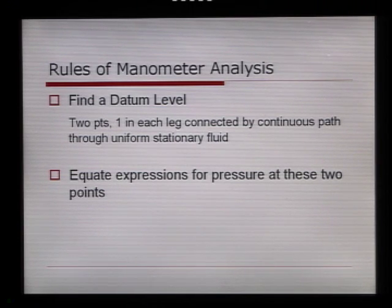Two rules you have to remember with manometry. First, find a datum level. A datum level are two points, one in each leg connected by a continuous path through uniform stationary fluid. And second, equate expressions for pressure at these two points.